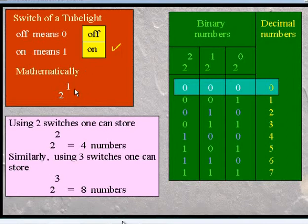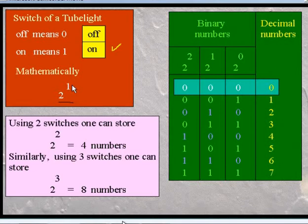Mathematically, we can write this as 2 raised to the power 1, where base 2 stands for the binary number system and the power 1 stands for the number of switches. Now, 2 raised to power 1 is equal to 2. Hence, we can store two numbers using this switch.